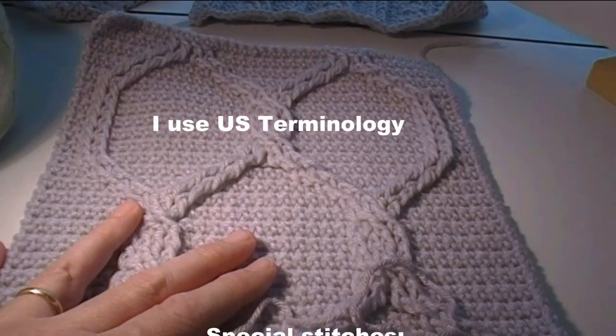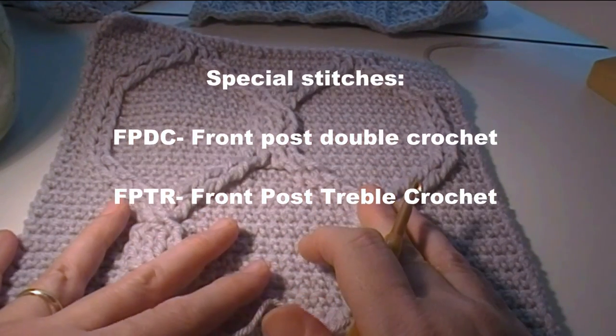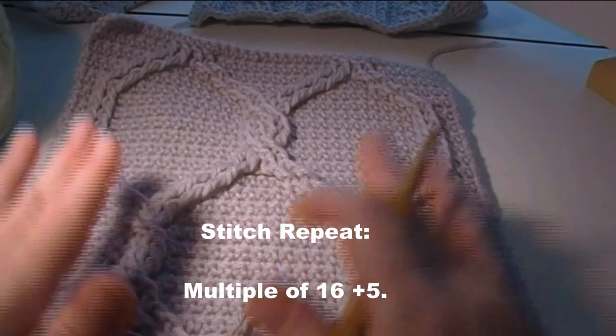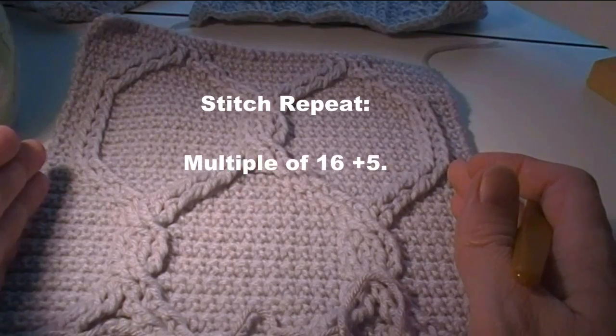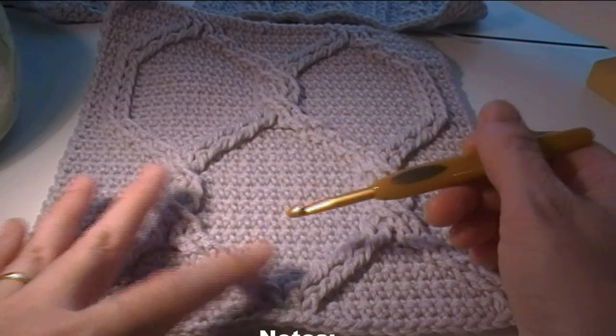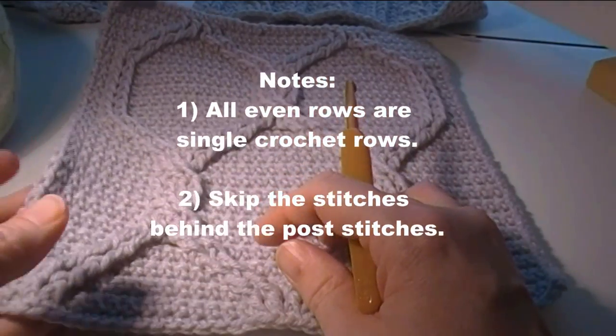There are a couple special stitches: a front post double crochet and a front post treble crochet. The stitch repeat, if you want to make this bigger, is a multiple of 16 plus 5. All even rows are single crochet rows and you skip the stitches behind the post stitches.